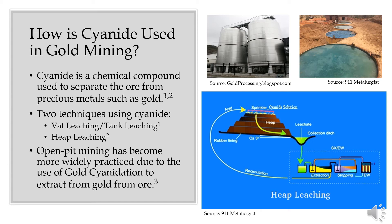Air is sometimes blasted into the vats as oxygen accelerates the leaching process. Once the gold has been extracted from the ore, the liquid is separated from the waste materials.